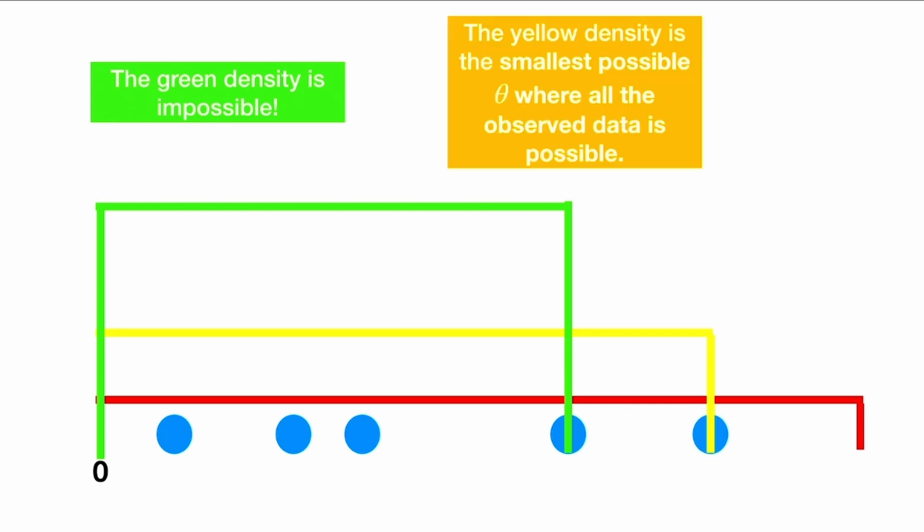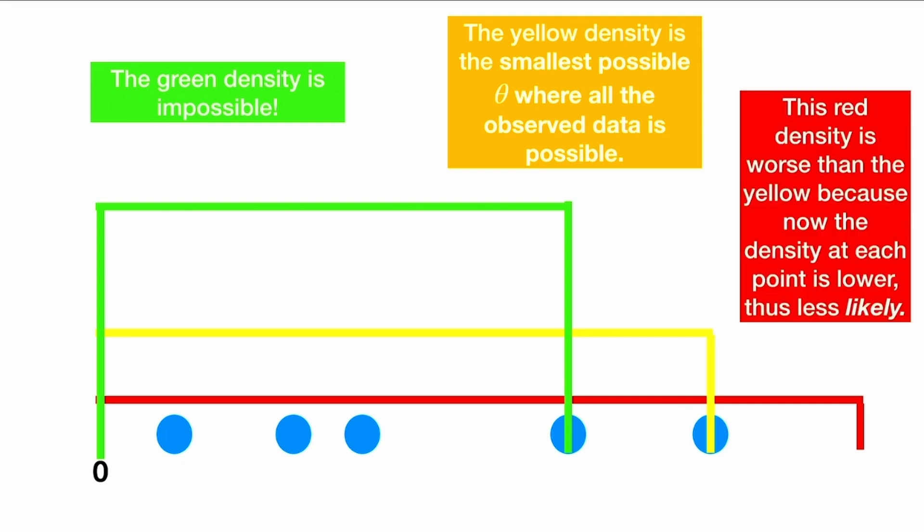The yellow density is the smallest possible θ where all the observed data is possible, and the red density is worse than the yellow because now the density at each point is lower and thus less likely.